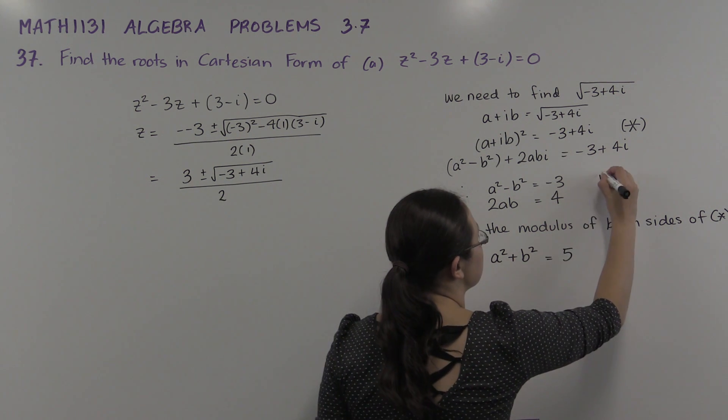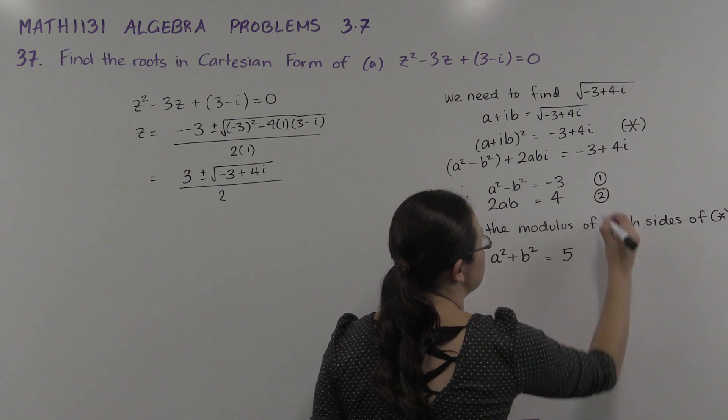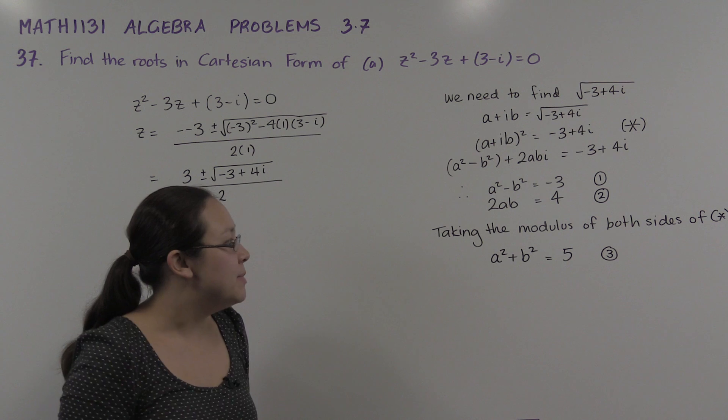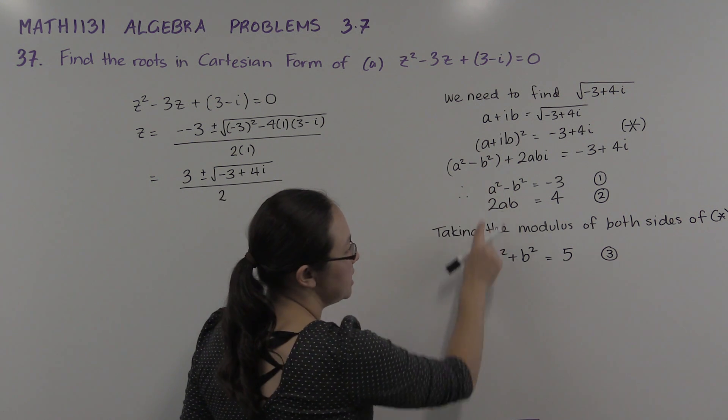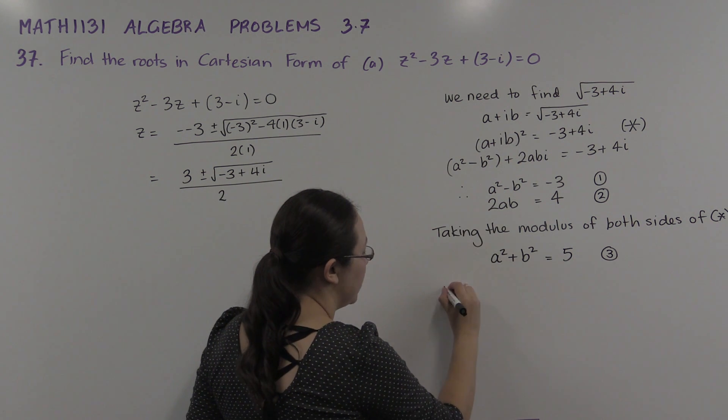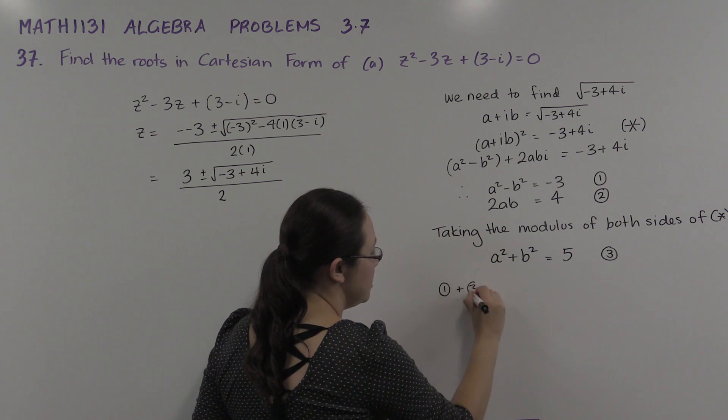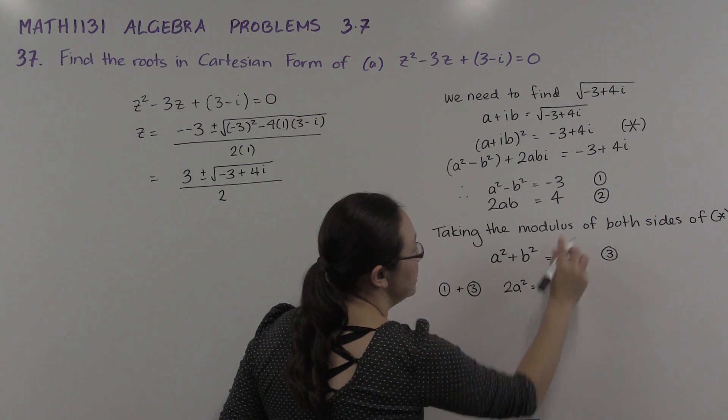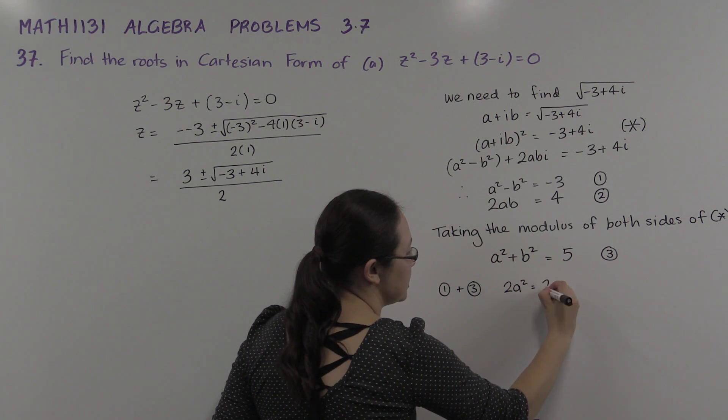This is much nicer to solve. We have three equations and two unknowns. So we've got more equations than we need, but it makes it much nicer. Because now if I add equation 1 plus equation 3, I eliminate the b² terms and I'll get 2a² = -3 + 5.